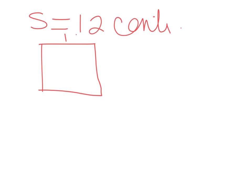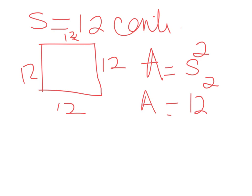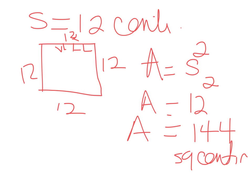The next problem is S equals 12 centimeters, and we know that it's going to be a square because all sides are equal. So this is 12 centimeters, and A equals S squared. So A will equal 12 squared, and 12 squared is 144. So A equals 144, in this case this is square centimeters. We could get 144 square centimeters out of our box.